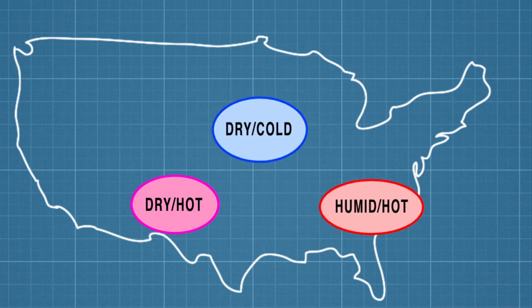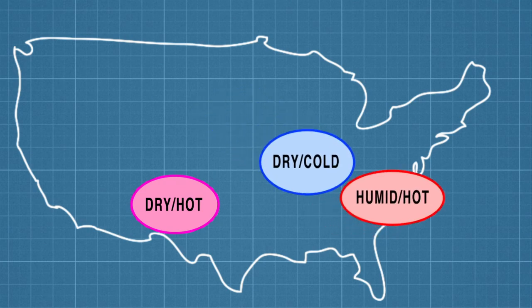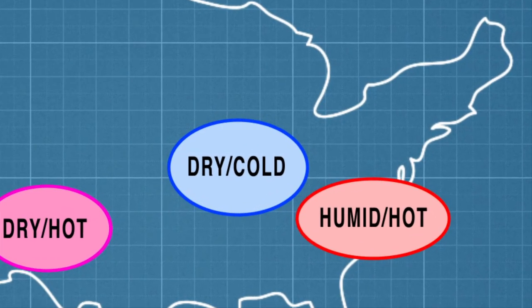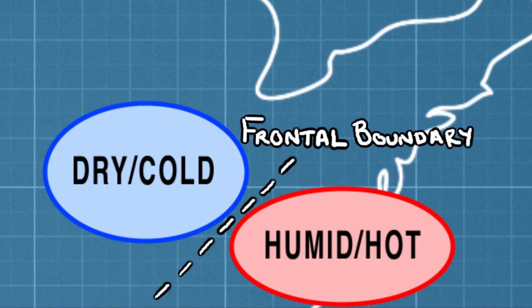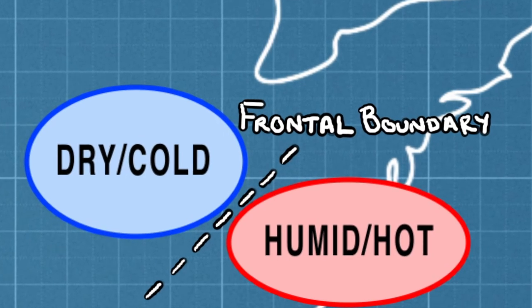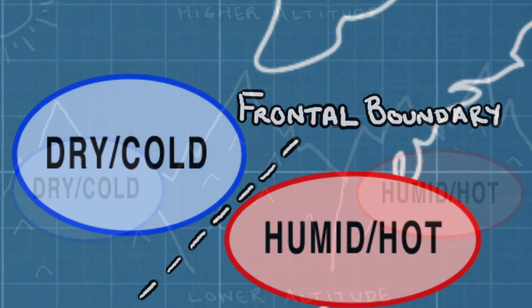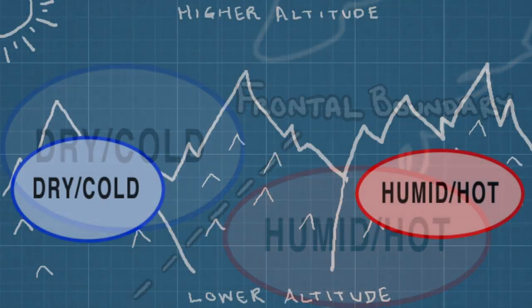But some of the most powerful storms arise when two air masses meet. The area where two air masses meet is called a frontal boundary, or simply a front. The interactions along these lines, which can stretch for a thousand miles or more, can have a powerful influence on clouds and weather.